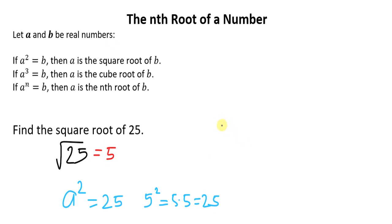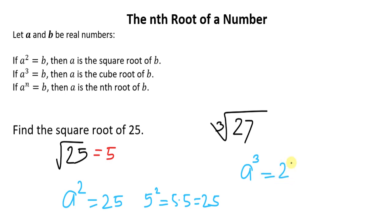Another example: what is the cube root of 27? What number, when raised to 3, gives 27? That is 3 times 3 times 3, which is equal to 27. So the cube root of 27 is 3.